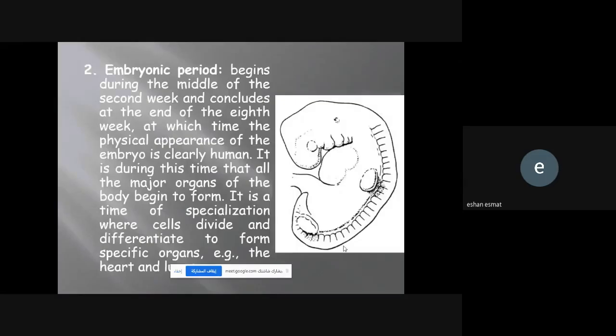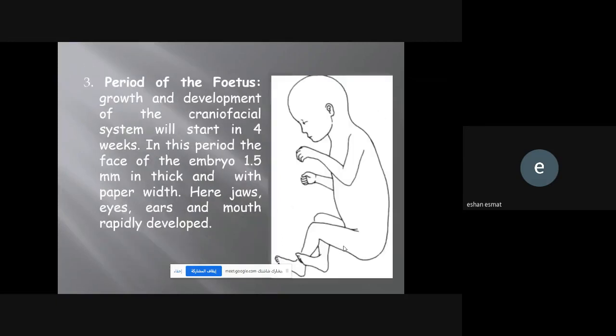During the ovum period, a single cell, the zygote, begins to multiply rapidly and forms several dozen cells. This mass of cells differentiates into an inner and outer layer of cells separated by a hollow cavity. The embryonic period begins during the middle of the second week and concludes at the end of the eighth week, at which time the physical appearance of the embryo is clearly human. It is during this time that all the major organs of the body begin to form, a time of specialization where cells divide and differentiate to form specific organs like the heart and the lung. Then comes the period of the fetus.